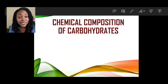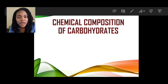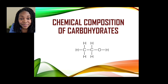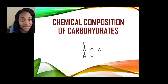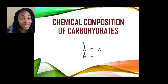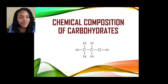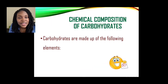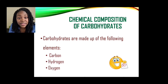Let us start with the chemical composition of carbohydrates. What you're seeing is a diagram on your screen with some letters. Can you identify which chemical elements each letter stands for? We're seeing the letters H, C, and O. If your answer was hydrogen, oxygen, and carbon, you are correct. Carbohydrates are made up of the following elements: carbon, hydrogen, and oxygen.